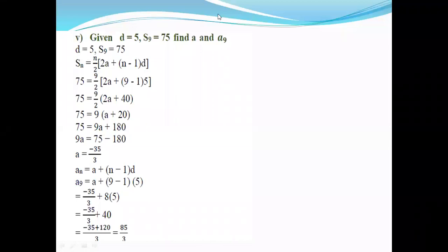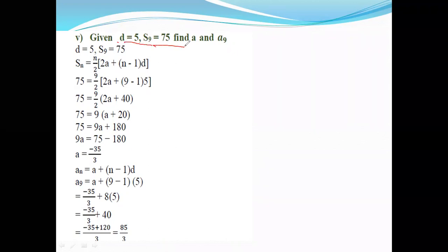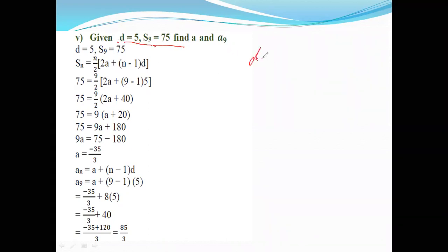Today we'll start with the fifth question. In the question itself, they have given that d is equal to 5 and S₉ is equal to 75. It means the difference is equal to 5, and the sum of 9 terms is equal to 75. How to solve this one?